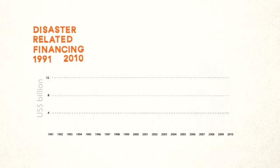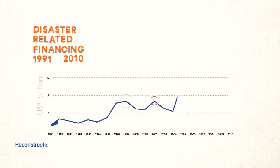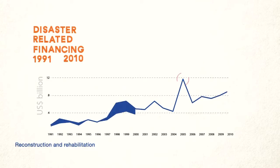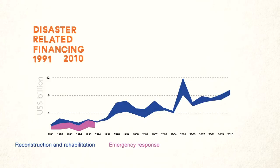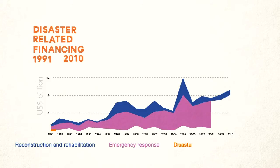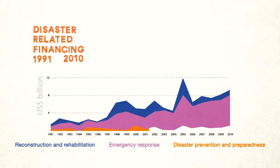Financial support for disasters increased over the past decades. But most of it was dedicated to activities undertaken in the aftermath of disasters, rather than reducing the risk of their occurrence. Reducing the risk of disasters before they occur has been a very low priority.